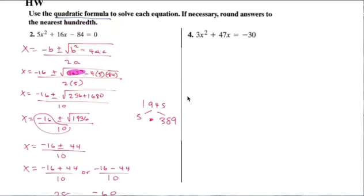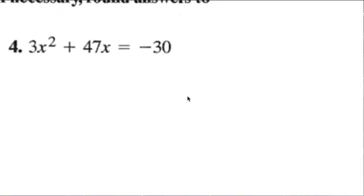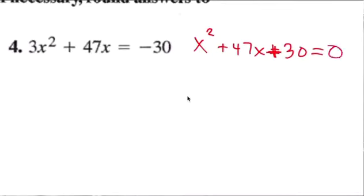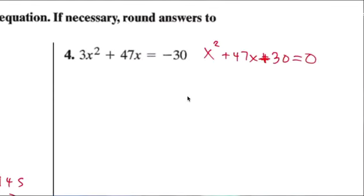Wow, I took up a lot of room. Now this one is x squared plus 47x equals negative 30, so add 30 to both sides. I'm not going to do every single one of these — I'll just get the answer sheet. I don't like the book because the book rounds to the nearest tenth, and I want you guys using radicals and simplifying radicals.